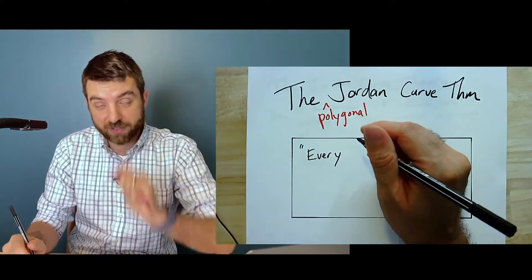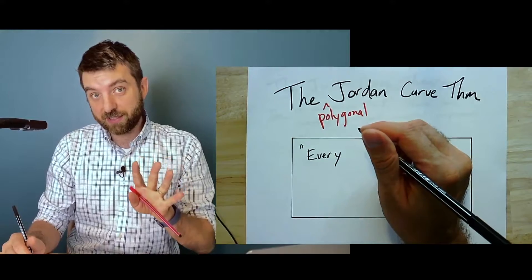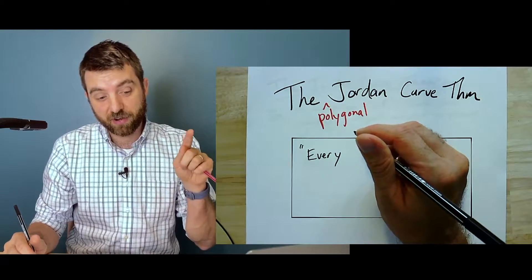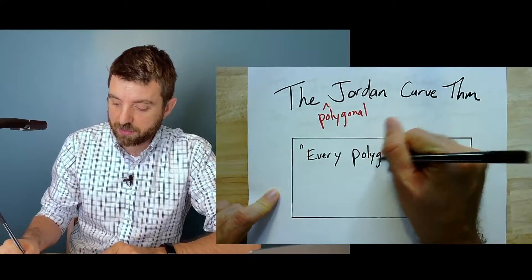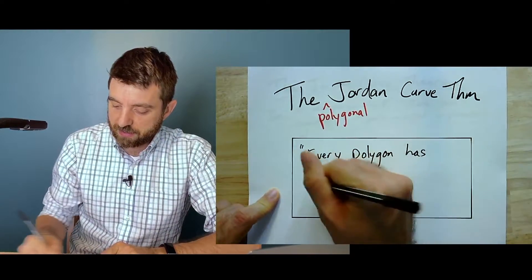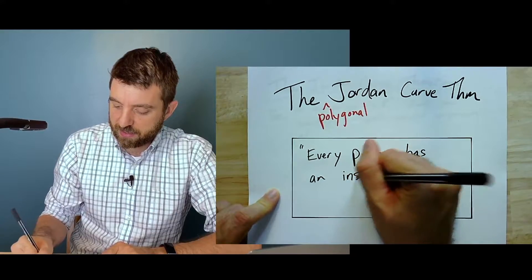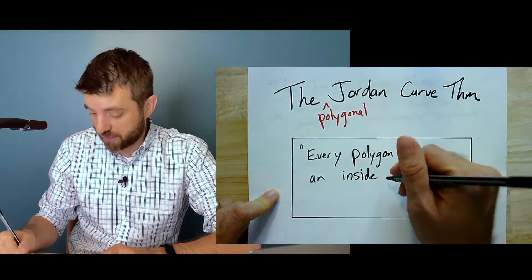But those two, not only does it have those two parts, those two faces, but they're disconnected. That is, you can't get from the inside to the outside without passing through it. So every polygon has an inside and an outside, and those are the only two sides.